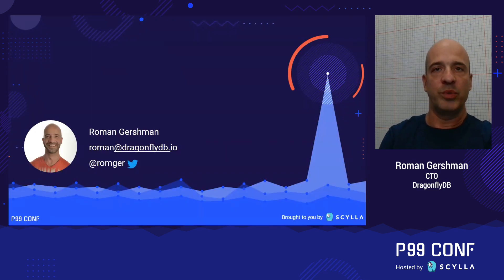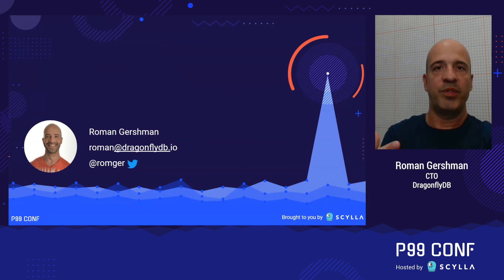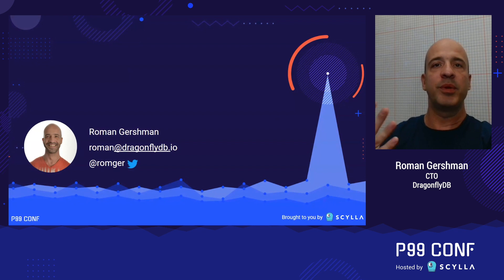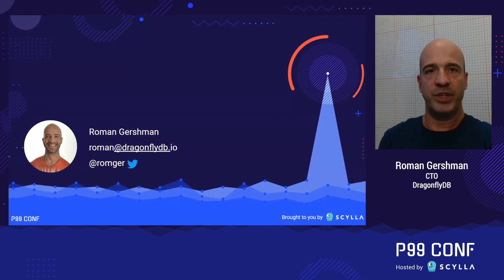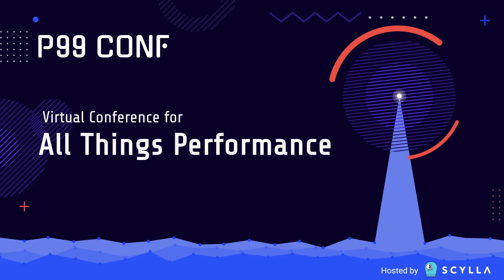To summarize: even though p99.9 of a dash table is seven times higher than of Redis dictionary, we consider it an acceptable trade-off because it's still under one millisecond and totally fine for an in-memory store. In return, we reduce the maximum latency by a factor of hundreds. Is it still possible to decrease the p99.9 latency when using dash table? I'll leave this question to you as an exercise. Dragonfly uses dash table, which is faster than a regular hash table. More importantly, it provides a bounded, predictable latency even for extremely large hash tables. Thank you for your time and I hope you enjoyed my talk.